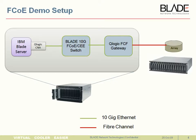For the demo today, this is the setup we have, where within one chassis we have one IBM Blade Server connected to an Emulex CNA — a Converged Network Adapter which can support FCoE and Ethernet traffic at the same time — connected to the Blade 10-gig FCoE-CE transit switch, which is then connected to an FCF gateway that understands FCoE and FC, and that is connected to an IBM DS4K 4-gig array.